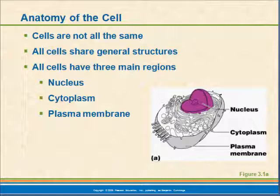But all cells do share some general structures. All cells have three main regions: we have the nucleus, we have the cytoplasm, and then we have the plasma membrane, or cell membrane. The plasma membrane is our outer boundary, the cytoplasm is the area between the cell membrane and the nucleus, and then the nucleus is a membranous structure which contains our genetic material.